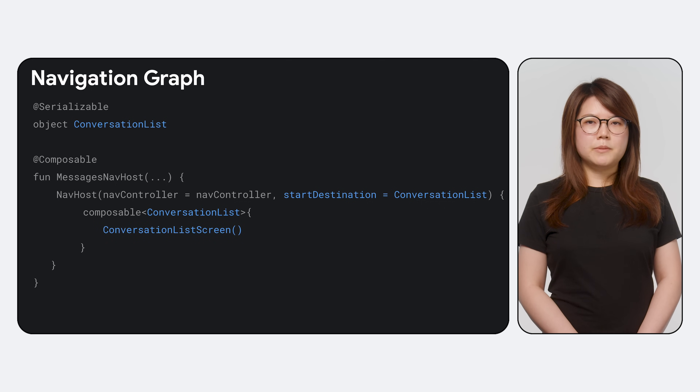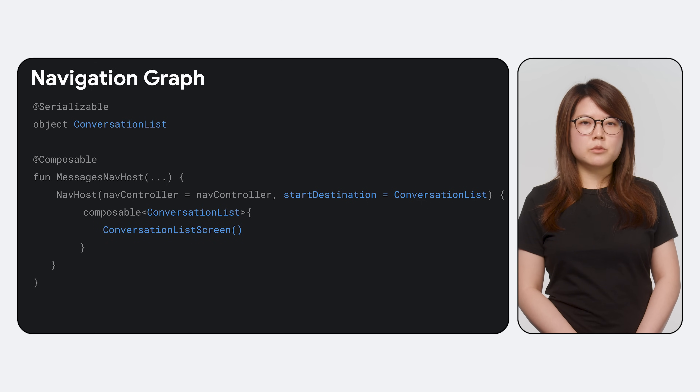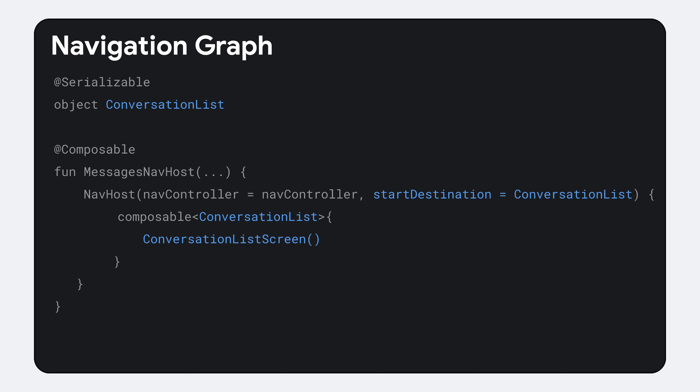Last but not least, in the content lambda you will declare the screen content for this destination, and now you have a basic graph for displaying a list of messages.